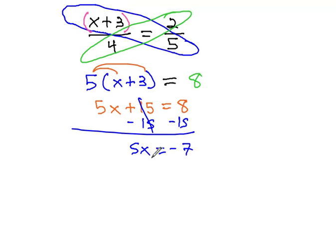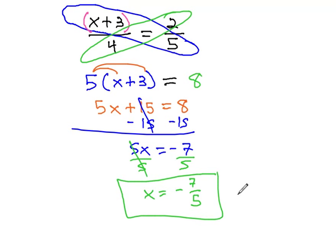And finally, divide both sides by 5, and x is equal to the fraction negative 7 fifths, or negative 2.4. We have our solution.